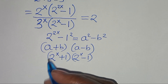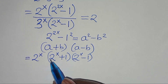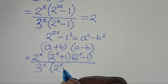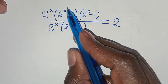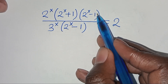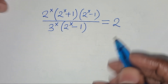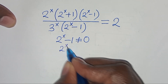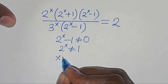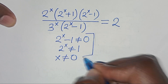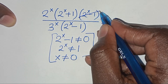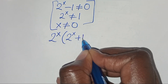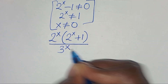So in the numerator we have 2^x times (2^x plus 1) times (2^x minus 1), all divided by 3^x times (2^x minus 1). The factor (2^x minus 1) cancels — this is valid provided 2^x minus 1 is not zero, meaning x must not equal 0. After cancellation we have 2^x times (2^x plus 1) divided by 3^x, equals 2.